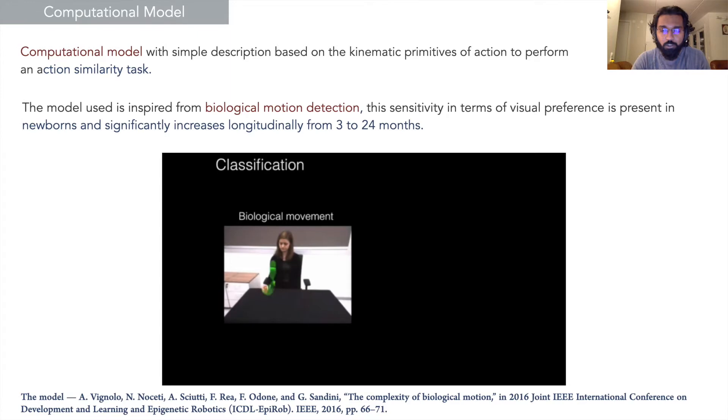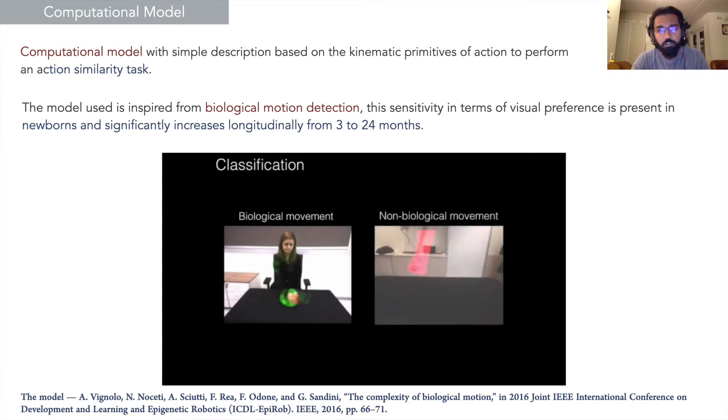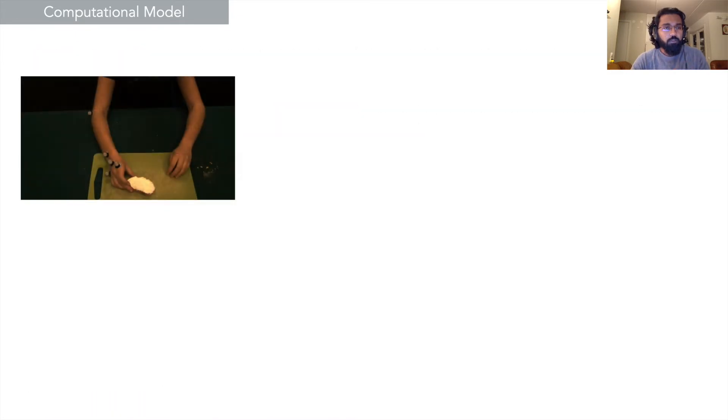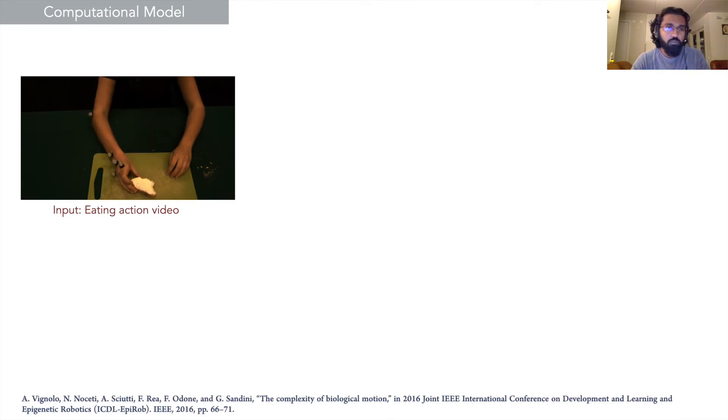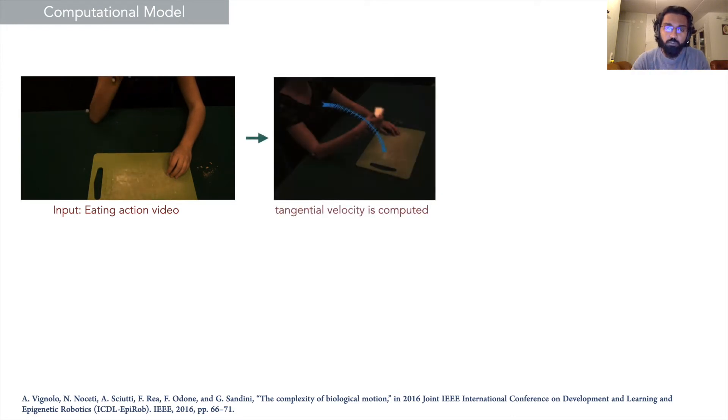The green depicts biological motion whereas the red depicts non-biological motion. This is something seen as a visual preference amongst infants. I will give a very brief intro into the building of the model. If you give an action as input, the model will extract the tangential velocity from the optical flow.